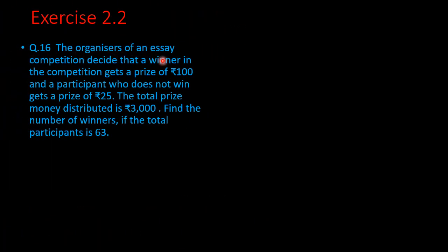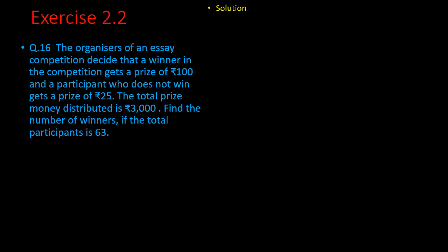Question number 16. The organizers of an essay competition decide that a winner gets a prize of rupees 100 and a participant who does not win gets a prize of rupees 25. The total prize money distributed is rupees 3000. Find the number of winners if the total number of participants is 63. After reading the question, we have to find the number of winners, so we take it as y.